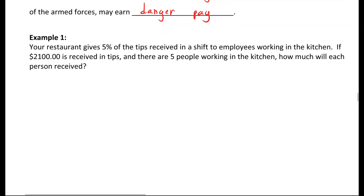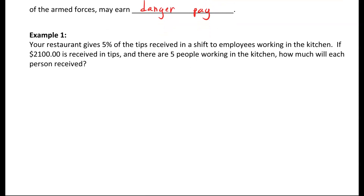In example one, your restaurant gives 5% of the tips received in a shift to employees working in the kitchen. If $2,100 is received in tips and there are 5 people working in the kitchen, how much will each person receive?